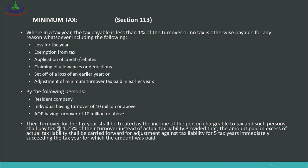Six different conditions are discussed here. When a person's tax payable in any year is less than 1% of their turnover — that is, their sales — then regardless of whether that person is claiming a loss, exemption, tax credits, rebates, allowances, or deductions, the following persons are required to pay minimum tax: a resident company, an individual having turnover of rupees 10 million or above, and an AOP having turnover of rupees 10 million or above. Even if you have no income, exempt income, or your tax credits and rebates eliminate your liability, you must still pay minimum tax.